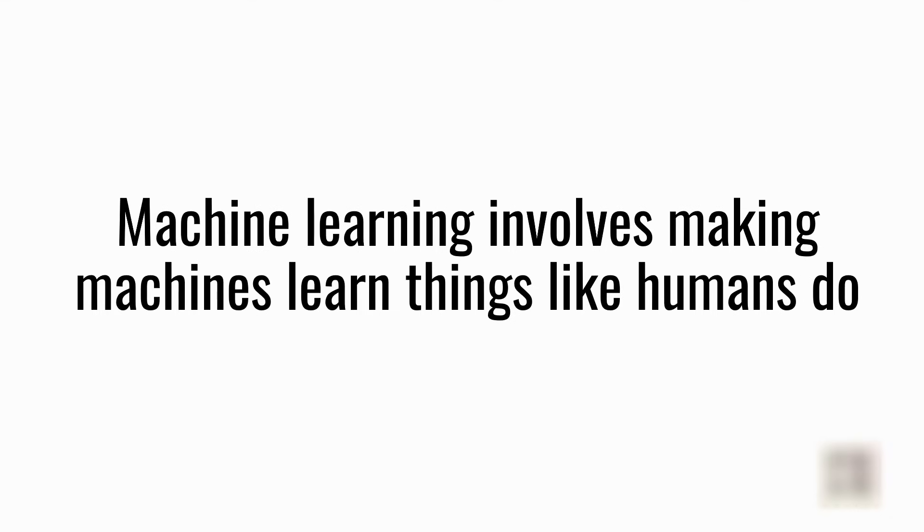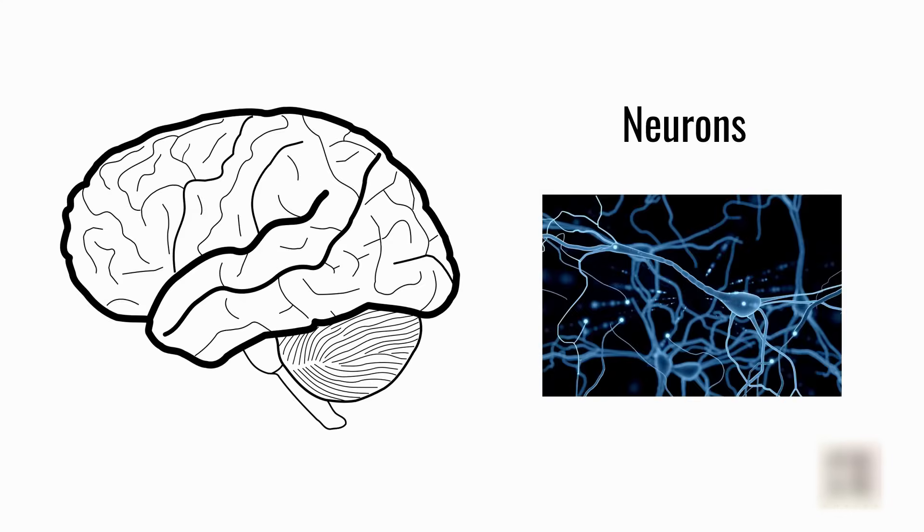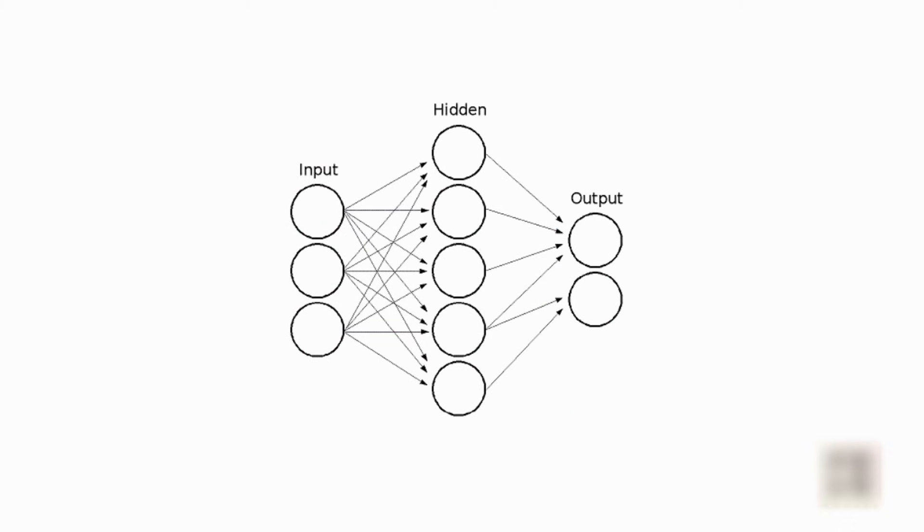So the question is why are humans better at driving cars and having conversations. For that, we need to understand how the human brain works. The human brain consists of tiny neurons. There are billions of neurons in our brain, and whenever we think or make a decision, a chemical signal is generated and these tiny neurons light up. Here is a simple model of these neurons where these rounds are the neurons and the arrows are the synapses that connect these neurons.